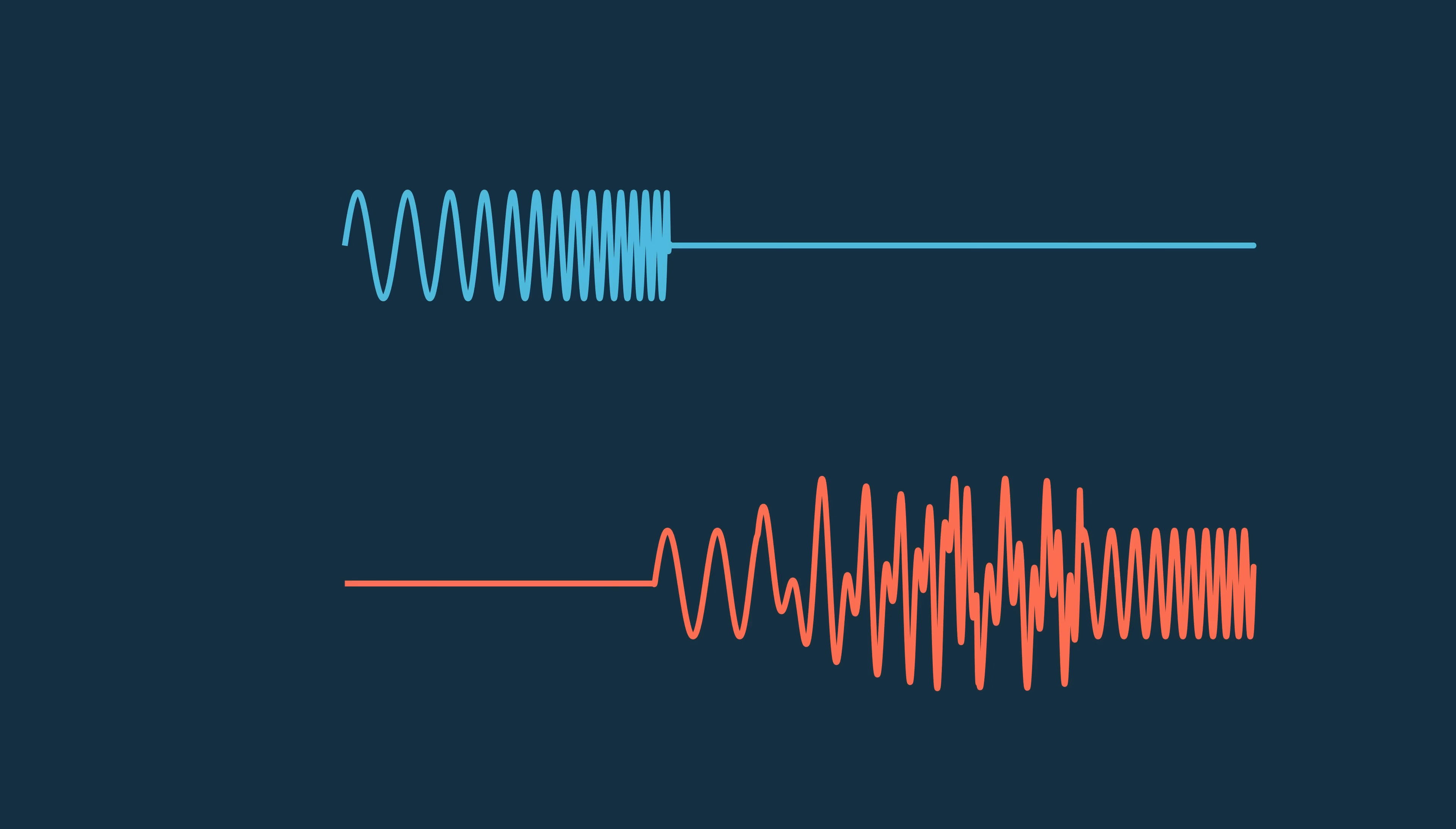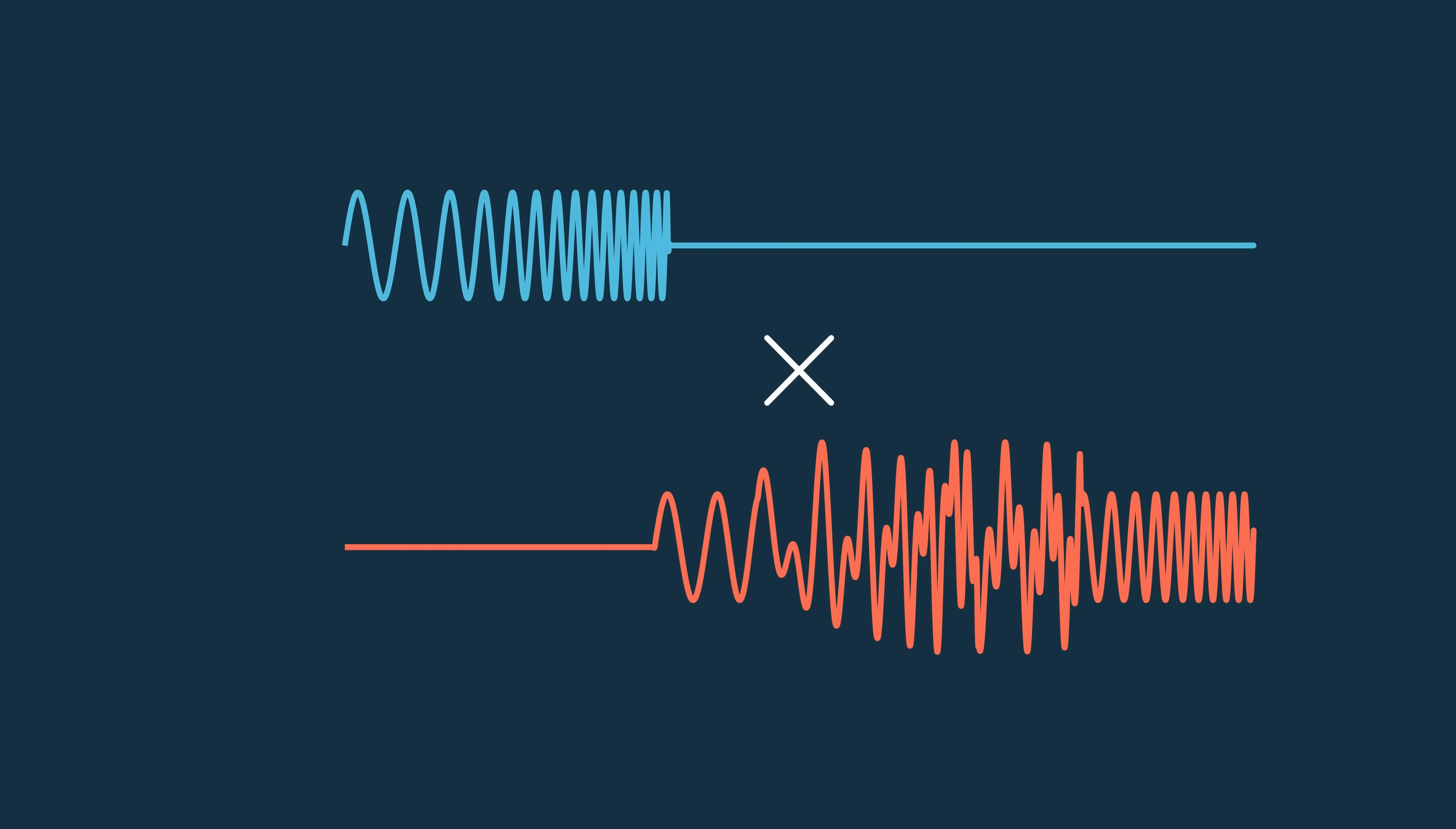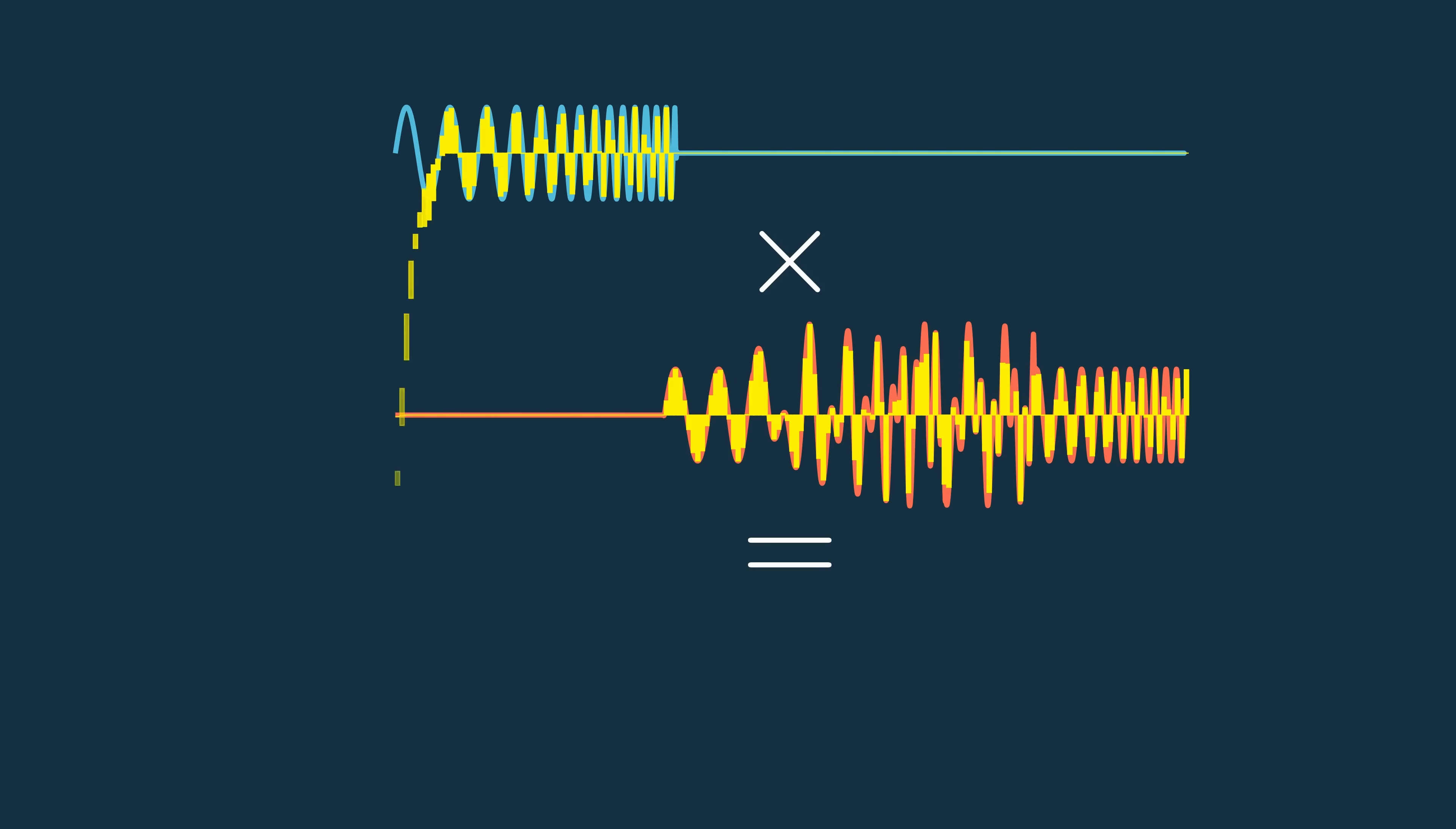It then takes each point in both signals and multiplies them. To make this pointwise multiplication more clear, let's sample both these signals at discrete intervals and multiply the samples to get a product.